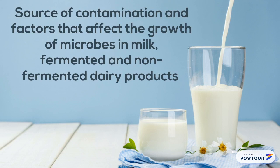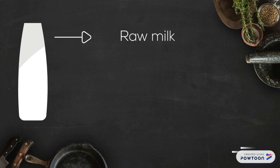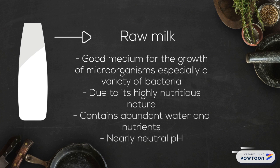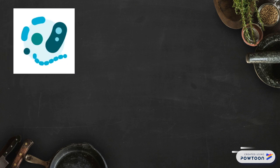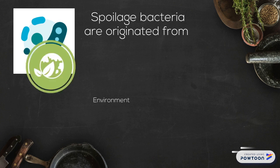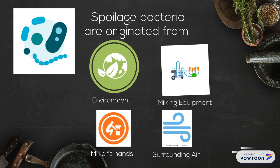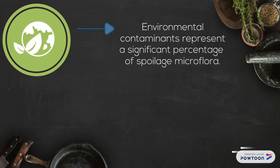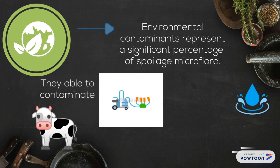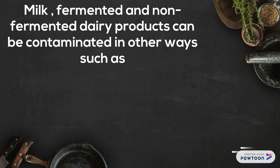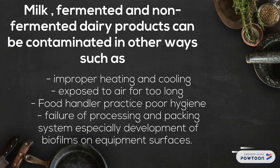Raw milk is a good medium for the growth of microorganisms, especially a variety of bacteria due to its highly nutritious nature. Milk contains abundant water and nutrients and has a nearly neutral pH. Spoilage microorganisms originate from the environment, milking equipment, mucus membranes, and surrounding air. Environmental contaminants represent a significant percentage of spoilage microflora. Milk, fermented and non-fermented dairy products can also be contaminated through improper heating and cooling, exposure to air for too long, food handlers practicing poor hygiene, failure of processing and packing systems, and especially development of biofilms on equipment surfaces.